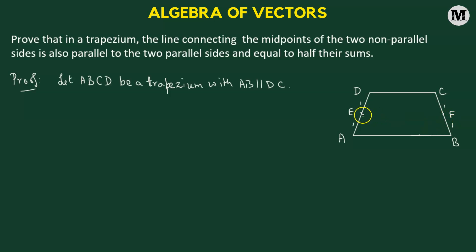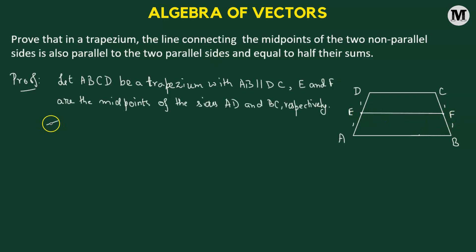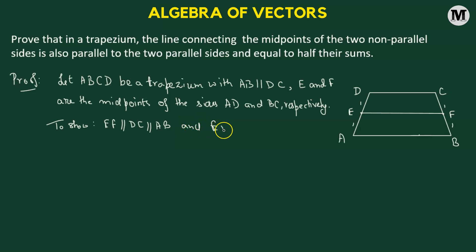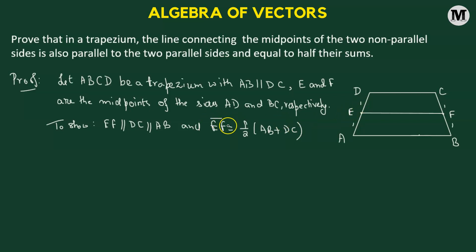We will join points E and F. Our goal is to prove that EF is parallel to DC and also parallel to AB, and we need to show that EF equals half the sum of AB and DC. We'll prove this using vectors, showing that EF vector equals half of AB vector plus DC vector.